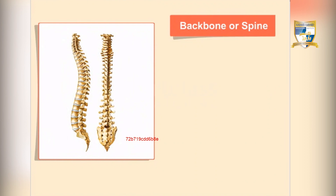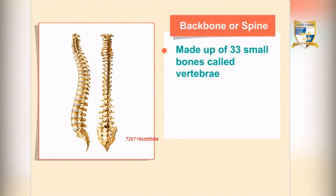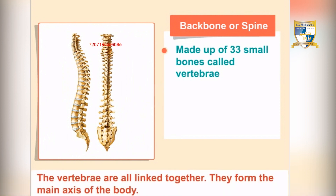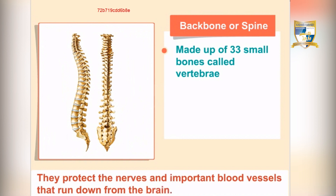The backbone or spine is made up of 33 small bones called vertebrae. The vertebrae are all linked together and form the main axis of the body. They protect the nerves and important blood vessels that run down from the brain — collectively protecting what is called the spinal cord.